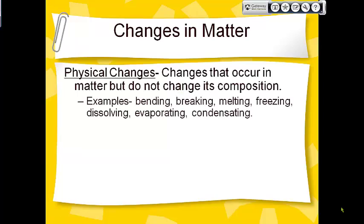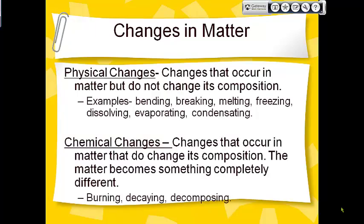There are also physical changes in matter and chemical changes in matter. Physical changes are when you change the matter's physical properties without changing what it's made out of. For instance, if you take a rubber band and break it, it's still a rubber band — you haven't changed what it's made out of. Or if you take a spoon and bend it, it's still a spoon, still made out of metal.